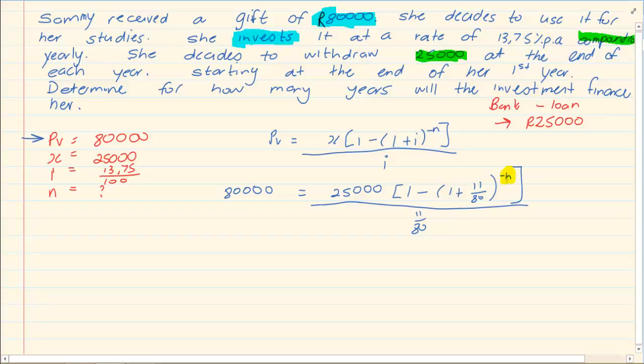Now, look where the unknown is. It is an n. We are trying to solve for n. Which means this is an annuity that has a calculate n. We are going to solve. You are going to get rid of the 11 over 80. Know your algebra. So, we are going to times by 11 over 80. And then we are going to divide by 25,000.